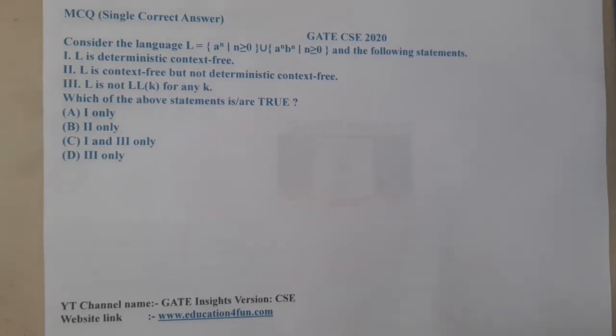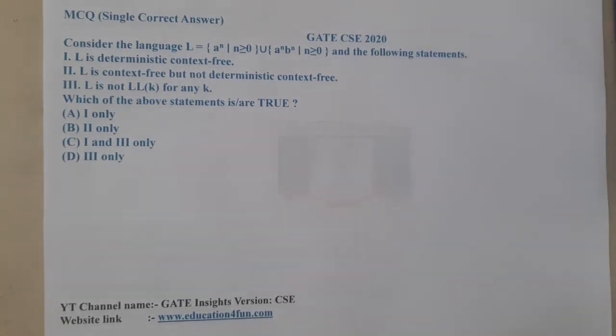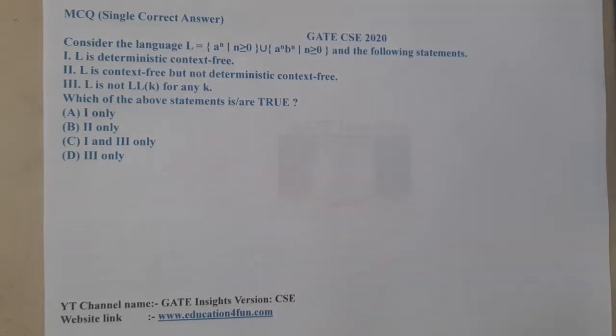The given question is: consider the language L equals a^n where n is greater than or equal to zero union a^n b^n where n is greater than or equal to zero. And the following statements: which of the following is true?